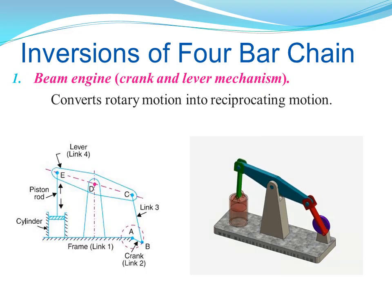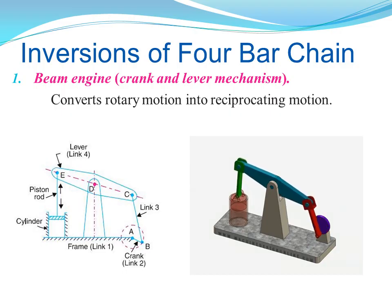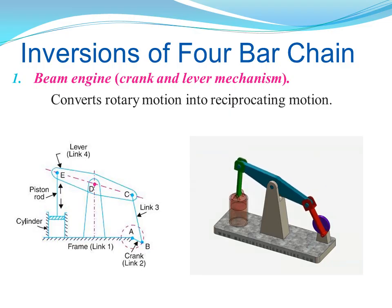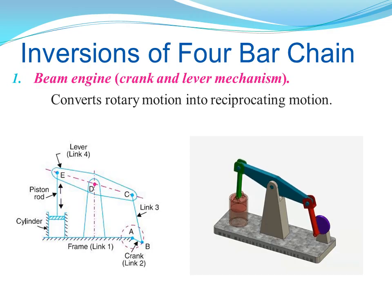We will look at a total of 3 applications. First, the Beam Engine, which is called the Crank and Lever Mechanism. In this mechanism, link 1 is the fixed link, and the crank is link 2 (AB), which makes a full 360-degree rotation. Link 3 is the coupler. Link 4 is the lever, which oscillates up and down. We also use a reciprocating motion for the piston arrangement. This mechanism is used in the Beam Engine and also in Borewells.